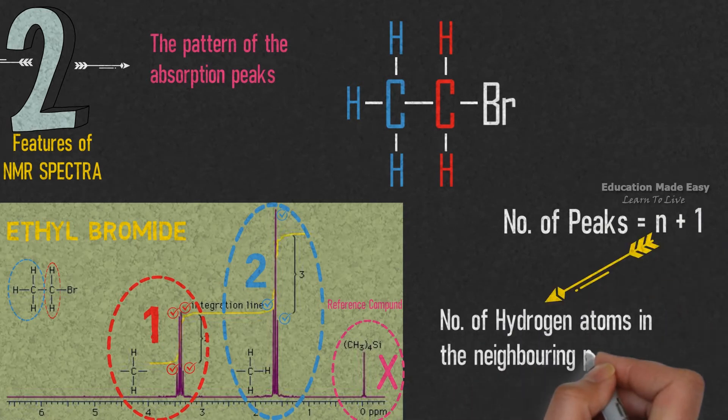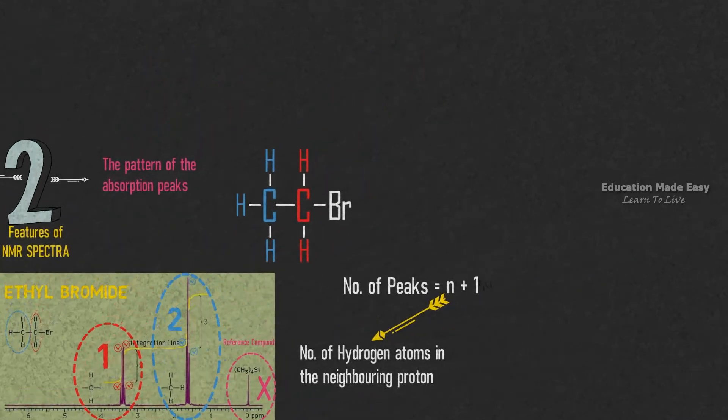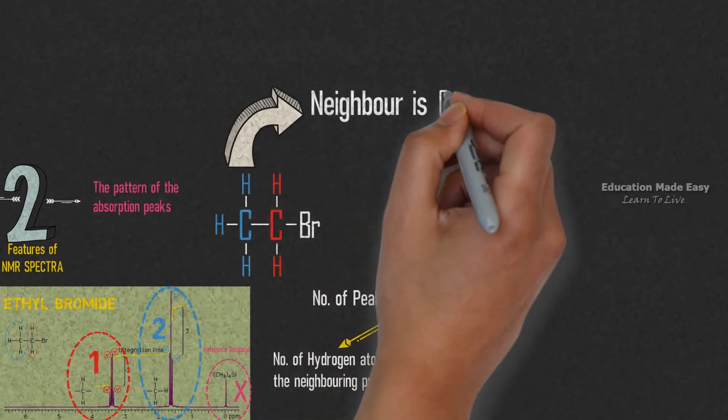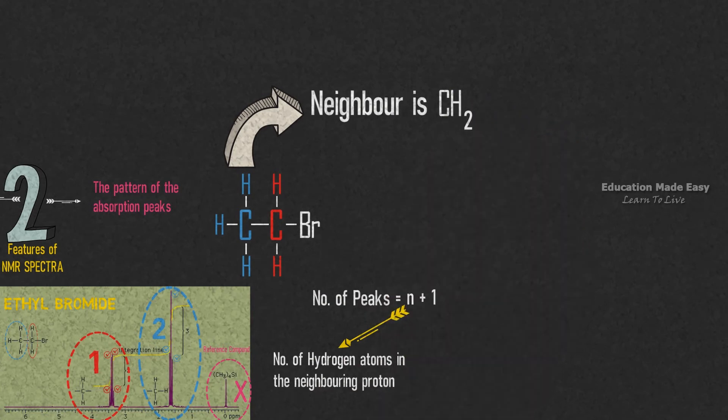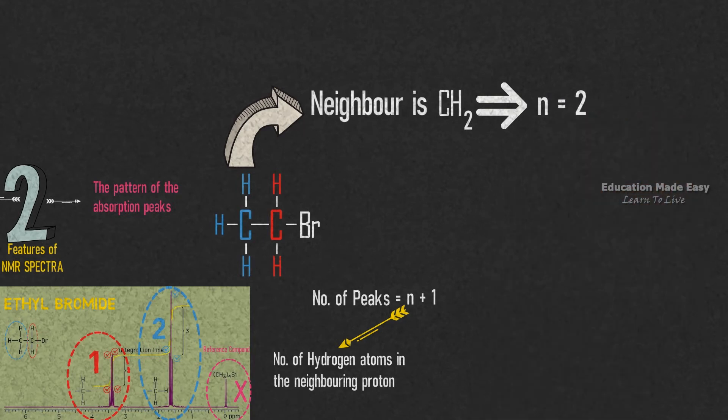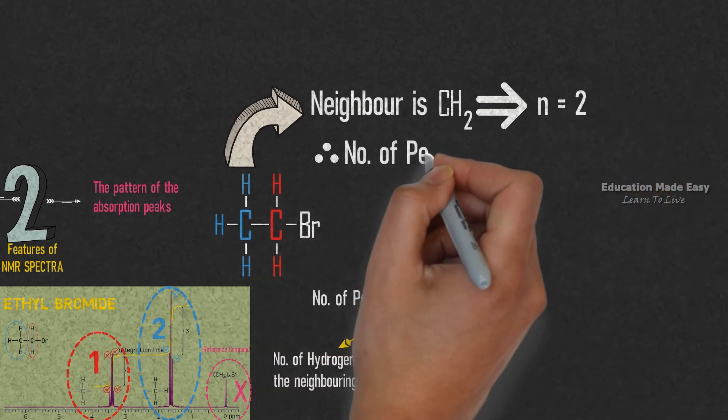From the structure itself, we can see that the neighbor is CH2 for the proton CH3. Therefore, the value of N for the CH3 signal is equal to 2. Therefore, number of peaks for CH2 signal is equal to 3.